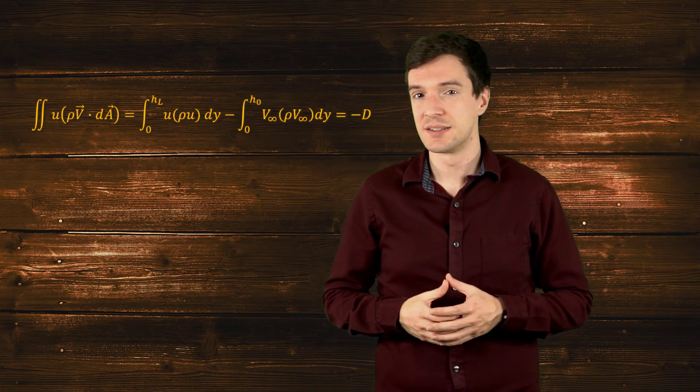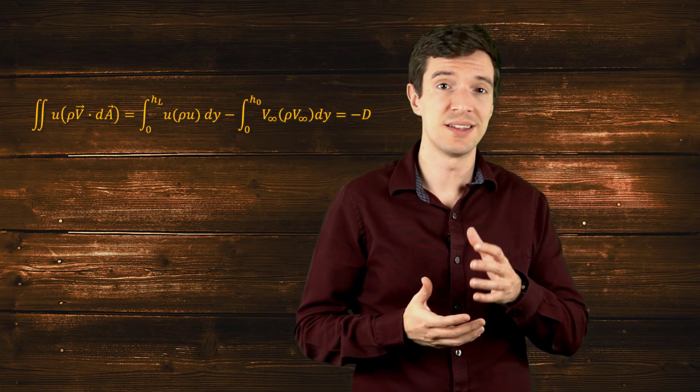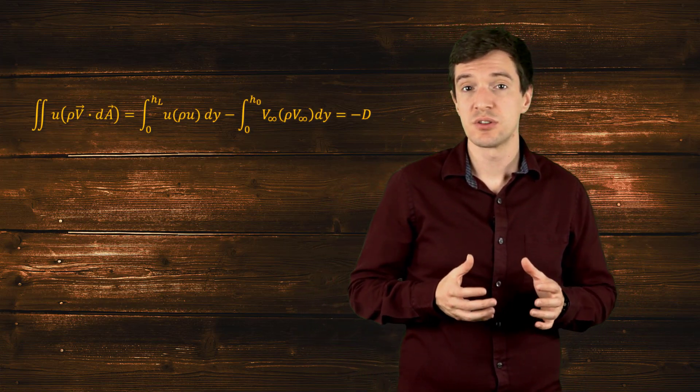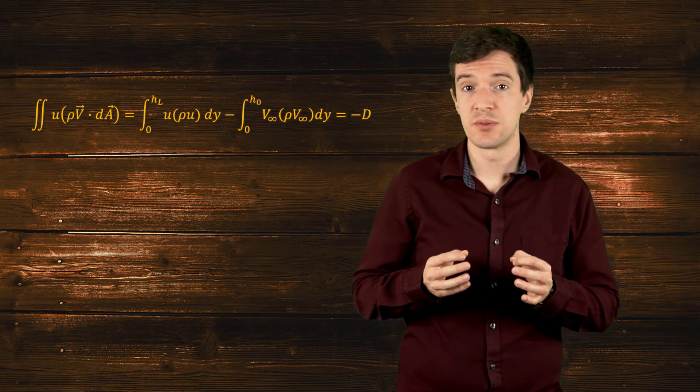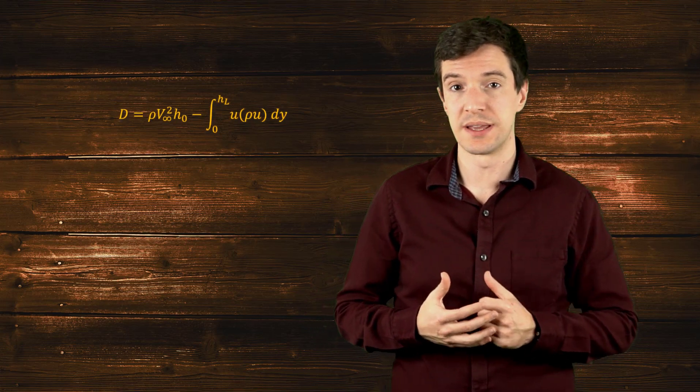Let's now use the integral approach to analyze the conservation of momentum along the x direction. Like the previous case, only the two vertical boundaries participate in the x-momentum calculations. The variation of momentum due to the boundary layer is equal to the drag acting on the plate.